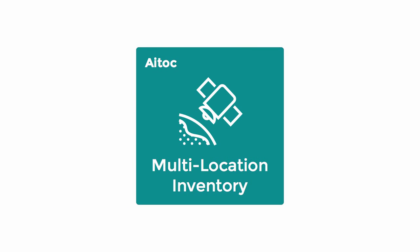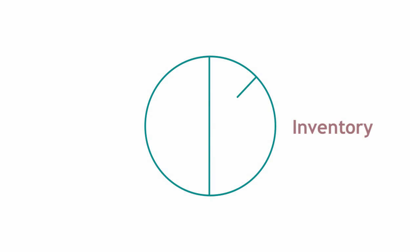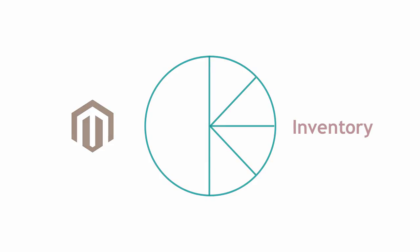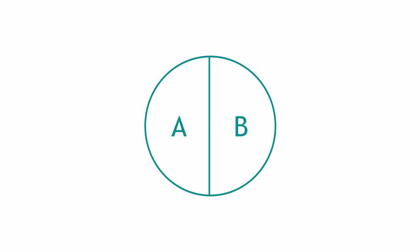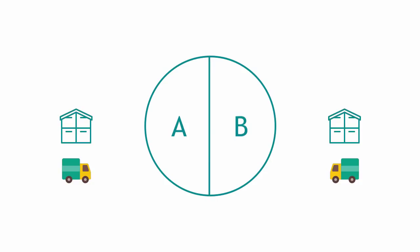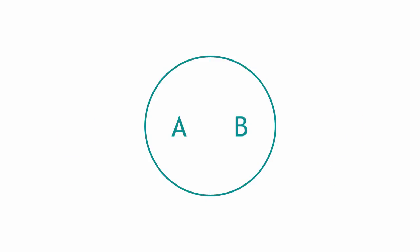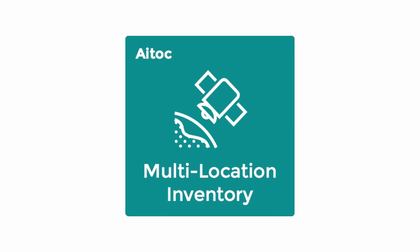Multi-location inventory allows you to easily split the inventory between several websites within one Magento installation. Let's say you have website A and website B that are shipped from different warehouses, but will you ever know if one of these warehouses runs out of a specific product? In default Magento, you never will, because it tracks all inventory under one roof. Here's when Multi-location inventory can help.